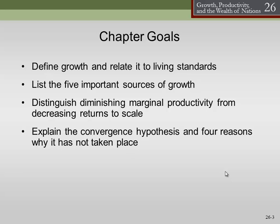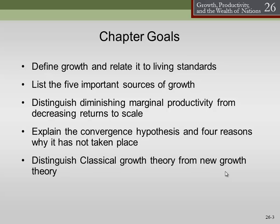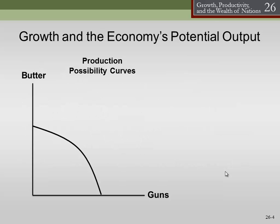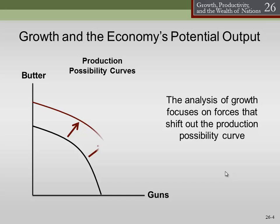We'll explain the convergence hypothesis and four reasons why it has not taken place, and distinguish classical growth theory from new growth theory. So growth in the economy is potential output. Essentially what we're talking about when we talk about growth is a shifting of the production possibilities curve, so that new points out here are now possible — they're now feasible. This can happen if we have more resources or if we have better technology; either of those can push this production possibilities curve out.